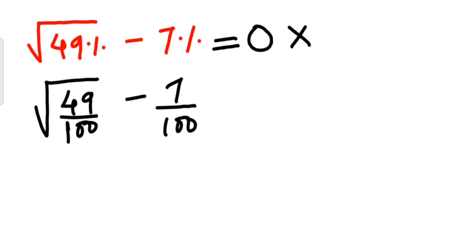Next, what we can do is under the root, I can write 49 as nothing but 7, and 100 can be written as 10, the whole square minus 7 upon 100.